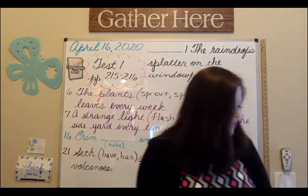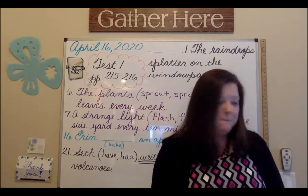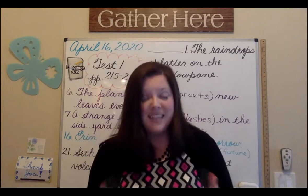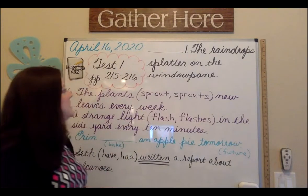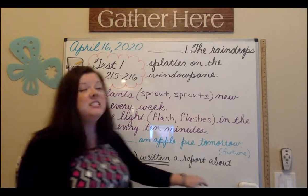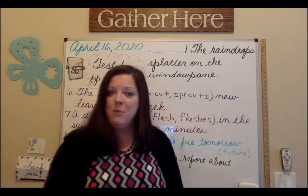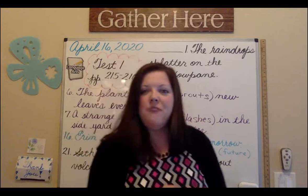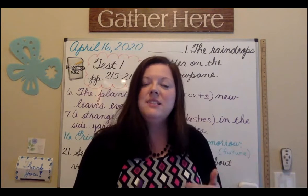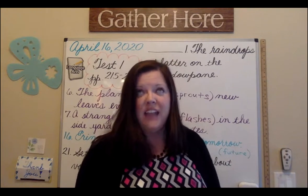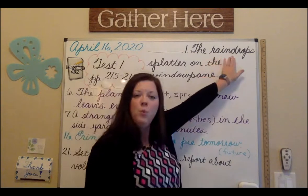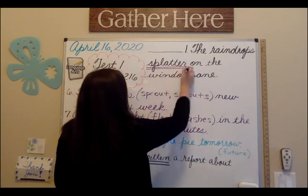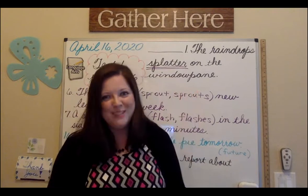Section one says: underline the verb twice, write present, past, or future to show the tense of each verb. I'm going to do number one together with you. Number one: the raindrops splatter on the window pane. According to my directions, I need to find my verb. My verb is the action that's taking place in this sentence. It might be helpful to find the subject because the subject is typically the one doing that action. My subject here is raindrops. What is the action the raindrops are doing? Splatter. Take your pencil and underline splatter two times. We always underline our verbs twice.